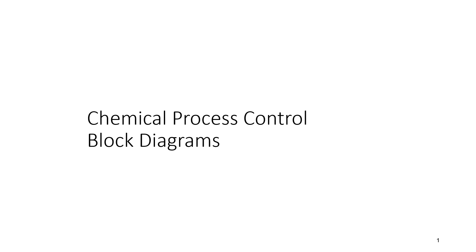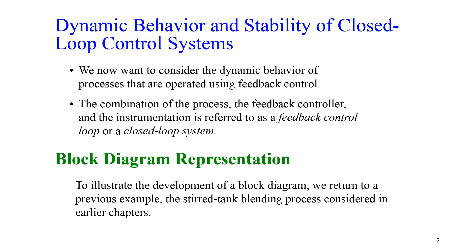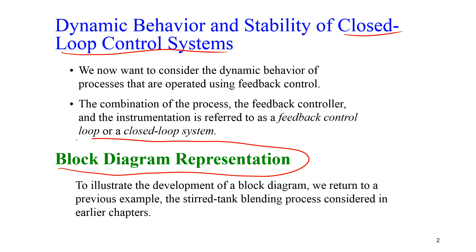We're going to cover block diagrams for this chemical process control course. What we want to do with block diagrams is be able to study the stability or behavior of closed-loop systems. In closed-loop, as we have feedback control, we want to see how that feedback controller affects the closed-loop performance. We're going to use a block diagram representation to illustrate how to develop a block diagram, particularly for chemical process control, but it's also applicable to other systems.